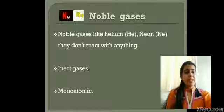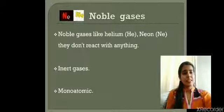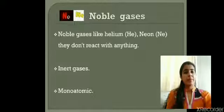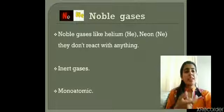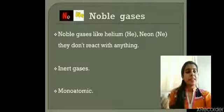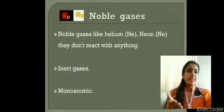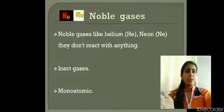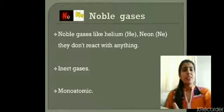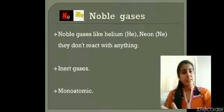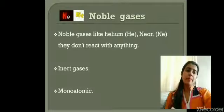Noble gases like helium and neon don't react with anything — they are inert and monoatomic. They have no tendency to combine with anything, which is why they are called noble gases. Just as we call a person noble if they are unaffected by negativity around them, these gases — helium, neon, krypton — don't combine with anything and have an independent existence. They are also called inert gases, and their atomicity is one.